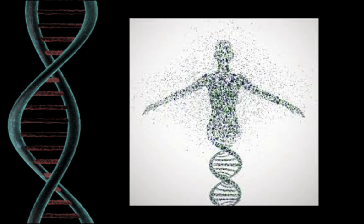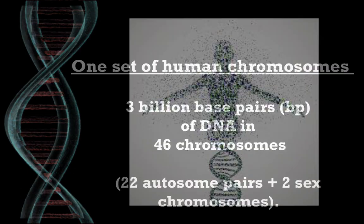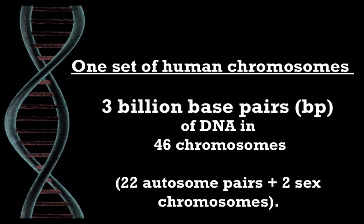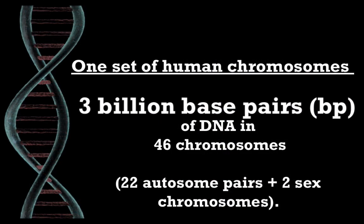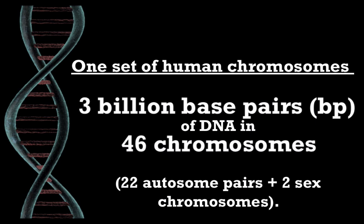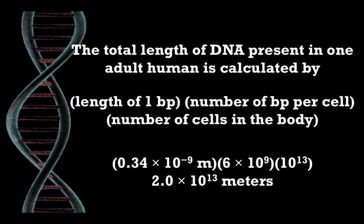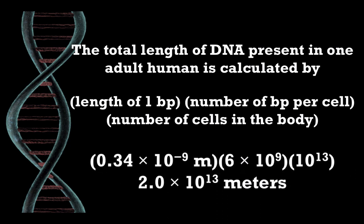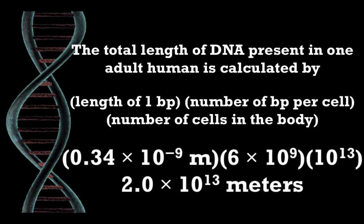The human genome comprises the information contained in one set of human chromosomes, which themselves contain about 3 billion base pairs of DNA in 46 chromosomes. The total length of DNA present in one adult human is calculated by multiplying the length of one base pair by the number of base pairs per cell and the number of cells in the body.